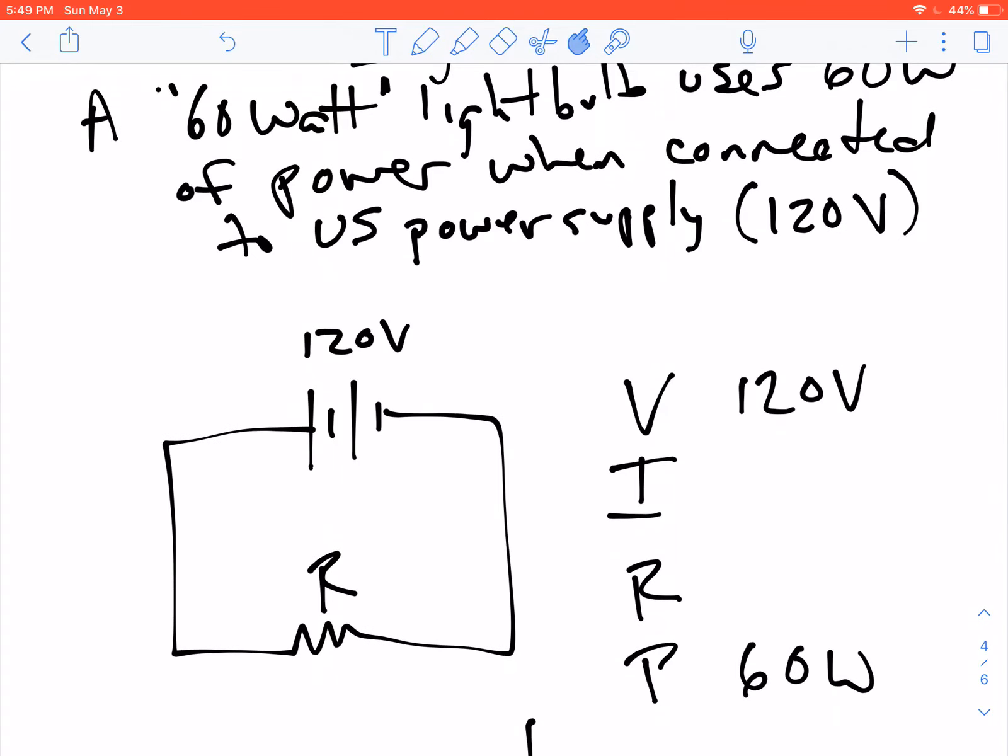Here we have a circuit diagram that shows this. Now, the wall power is not actually a battery, but we're going to simplify things and pretend that it is for now. We have a 120 volts power supply, and we have a resistor. And together, when the resistor is connected to the 120 volts, it uses 60 watts of power. We want to know what the resistance of this resistor should be, and then how much current is going to flow in this circuit when we do that. So let's start with figuring out the resistance.